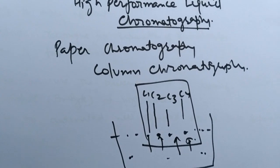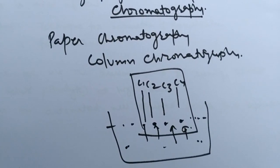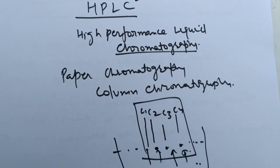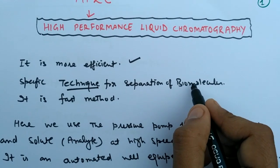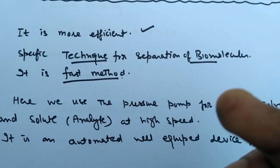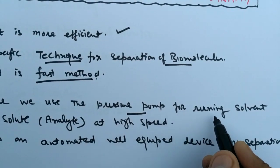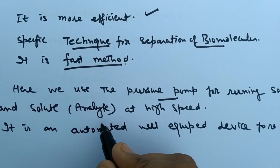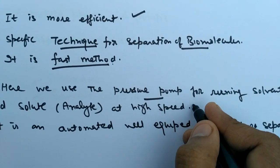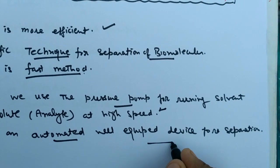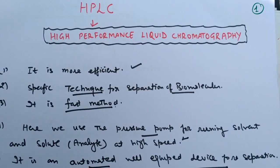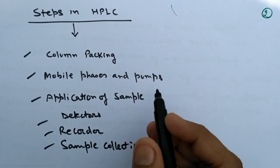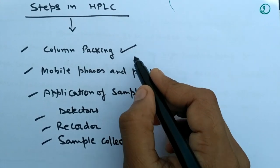With excess sample, back pressure occurs and disturbs the flow, affecting the result. So in HPLC, we apply high pressure to overcome this difficulty. HPLC is a very efficient, specific method for separation of biomolecules. It is faster than other techniques. We use a pressure pump for running the solvent and the analyte to be separated at very high speed. It is an automated, well-equipped device, and is a mostly recommended method for separation in day-to-day life.